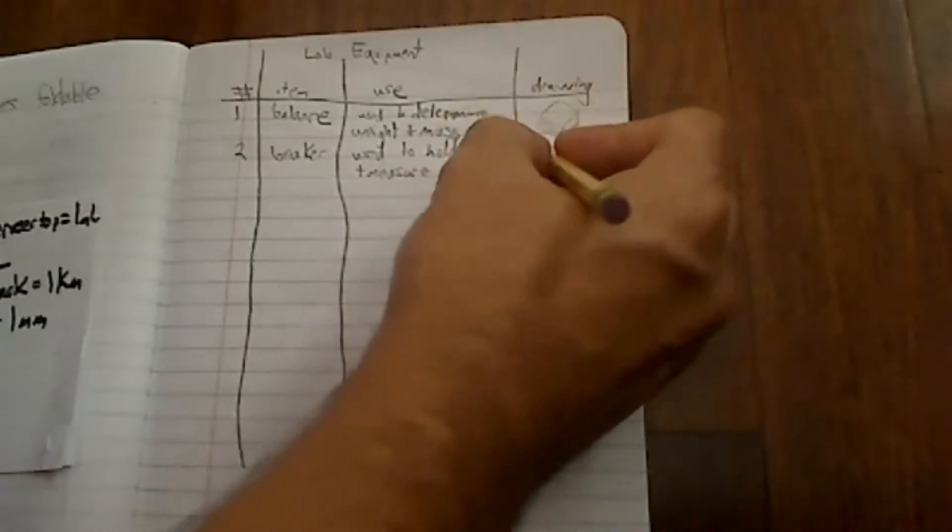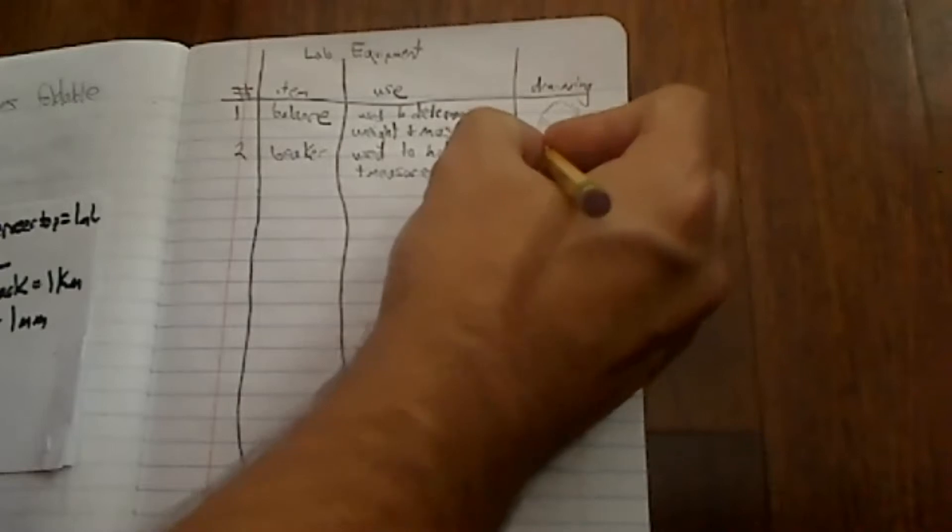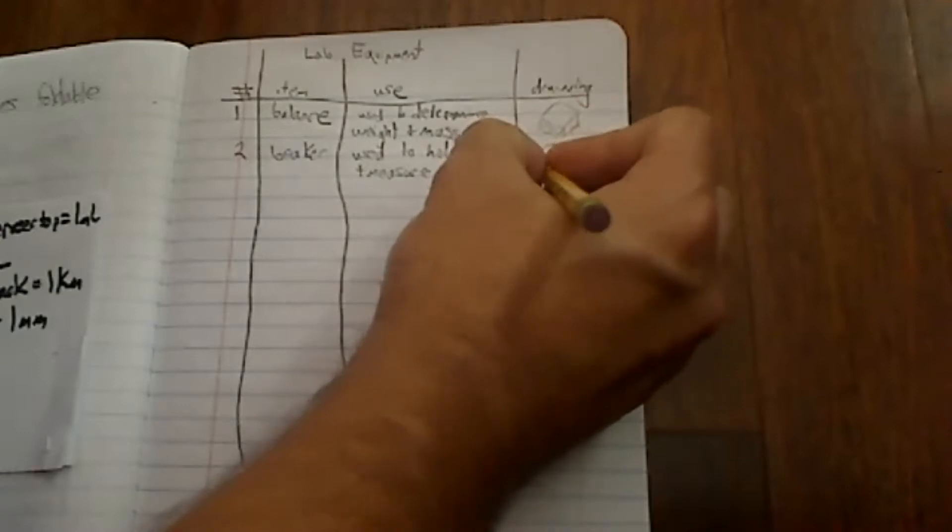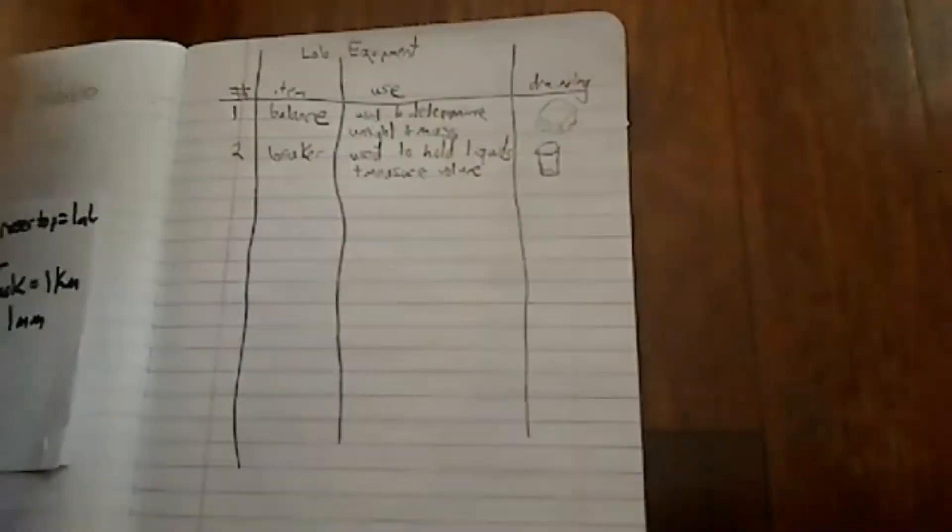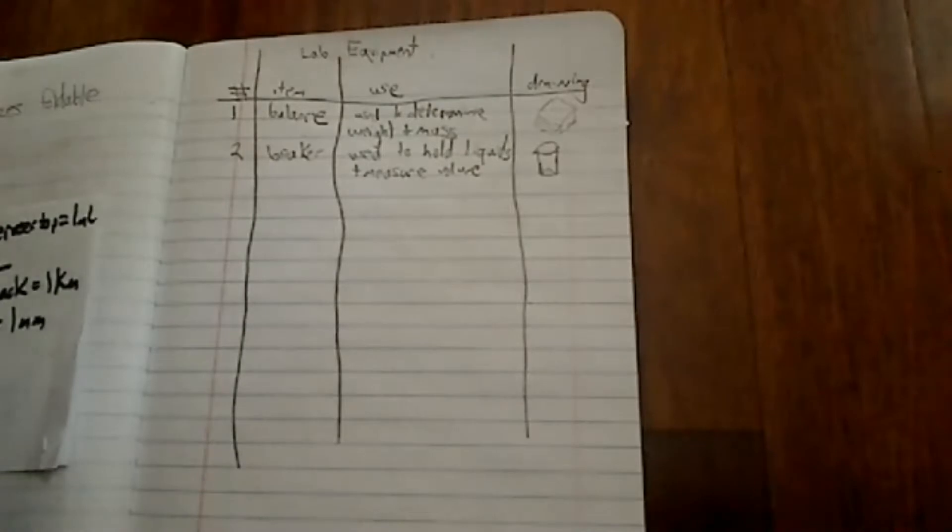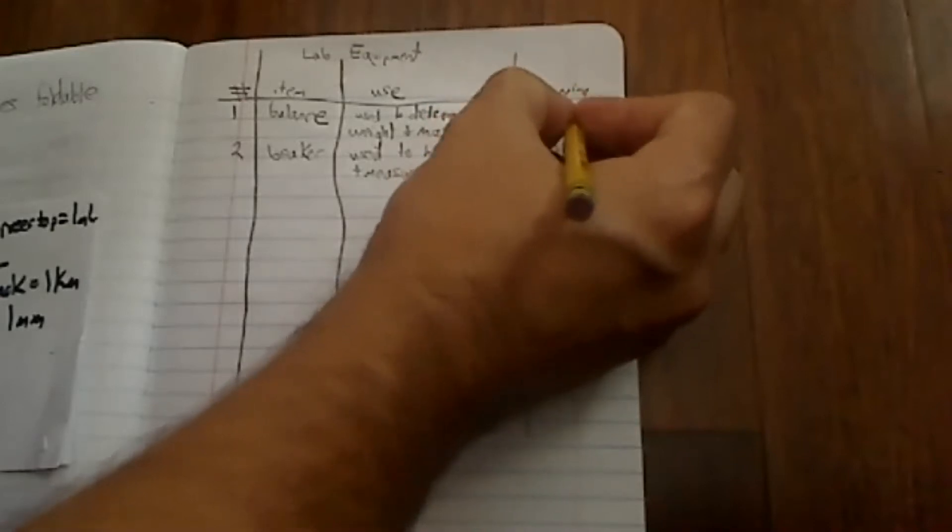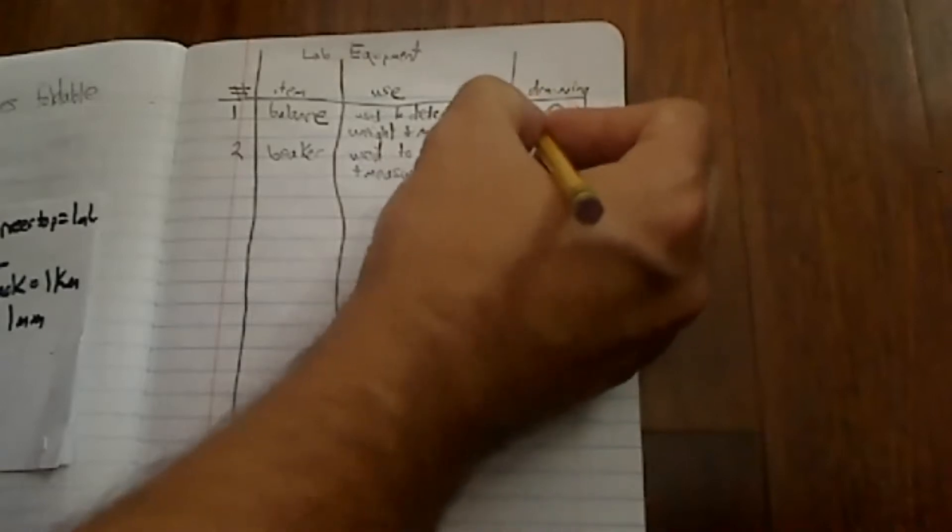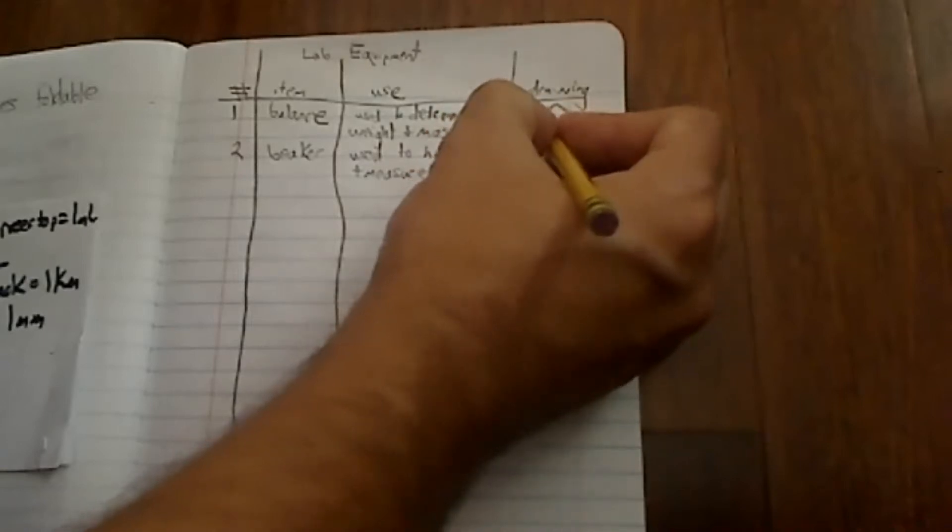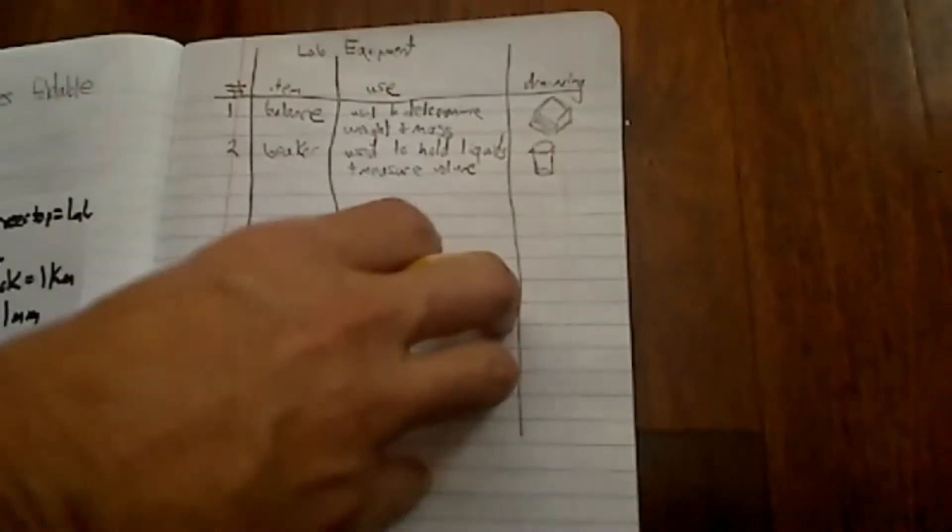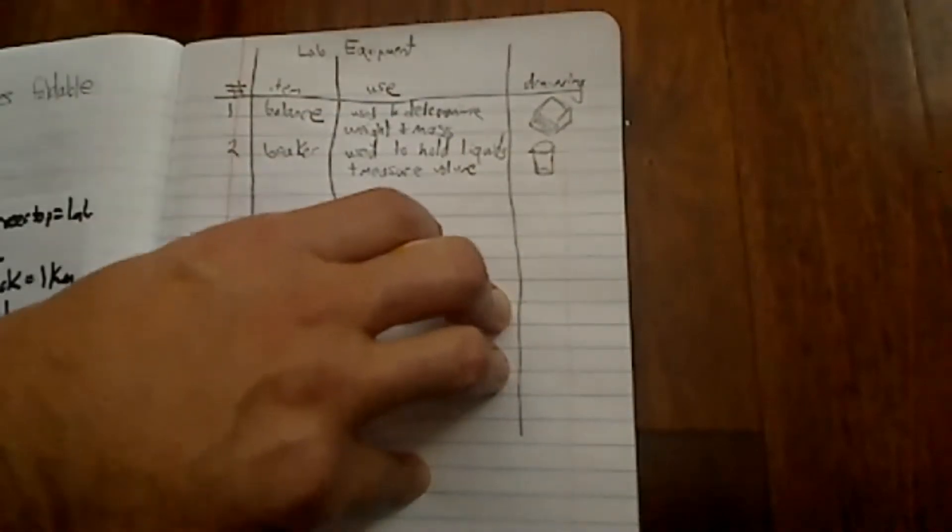And so I'm going to draw me a little beaker and again, I already told you, I'm not a good drawer, but I take a second and I do. And so there's my beaker. And so you're kind of getting an idea of what these things look like. And so I'm going to darken this one because you can't see it too well. Again, I'm not a good drawer, but you're going to do all those items that are on that list.